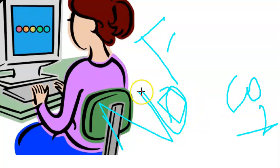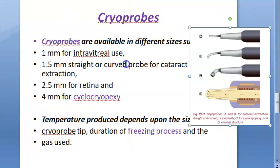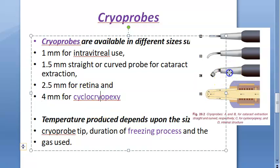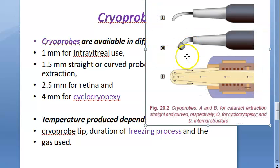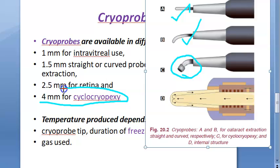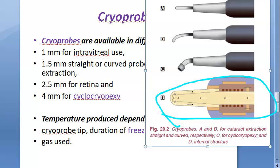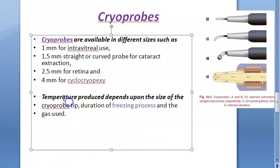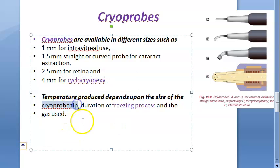There are many types of cryo probes of different sizes: 1 millimeter for intravitreal use, 1.5 millimeter straight or curved probe for cataract extraction, 2.5 millimeter for retinal use, and 4 millimeter for cyclocryopexy. The temperature produced depends on the size of the cryo probe tip, the duration of the freezing process, and the gas used.